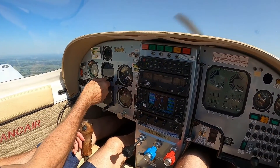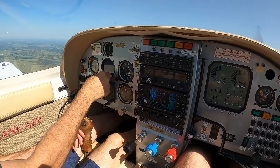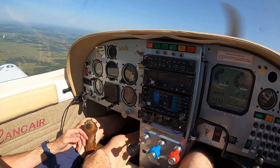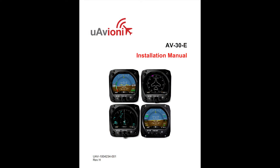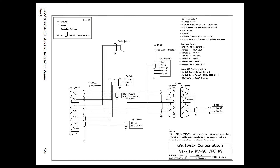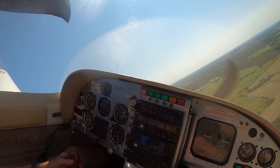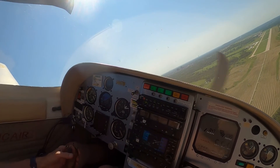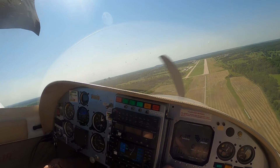GPS steering (GPSS) will be available as an additional software unlock with the release of our next accessory, the AV-HSI. Installation information and example wiring diagrams for the AV-APA are included in the latest release of the AV-30E installation manual, REV-H. Operating information can be found in the AV-30 pilot's guide. The AV-APA currently supports STEC system 20, 30, 40, and 50 autopilots. Please contact UAvionics technical support or sales to request support of additional analog autopilots. Version 2.4.1 continues to support serial communication with TRIO and AeroCruise autopilots.